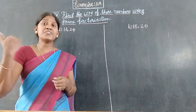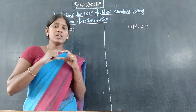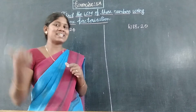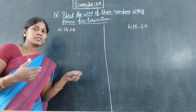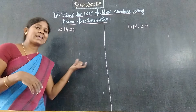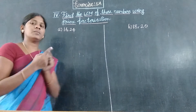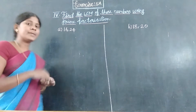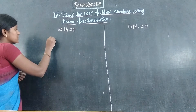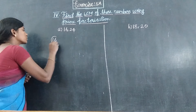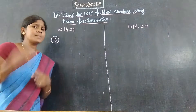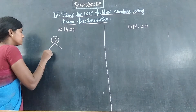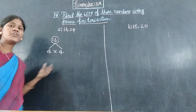First, we are going to find the factors of 16, ending with prime numbers. For 16, we can find factors. Four fours are sixteen — so 16 equals 4 times 4.